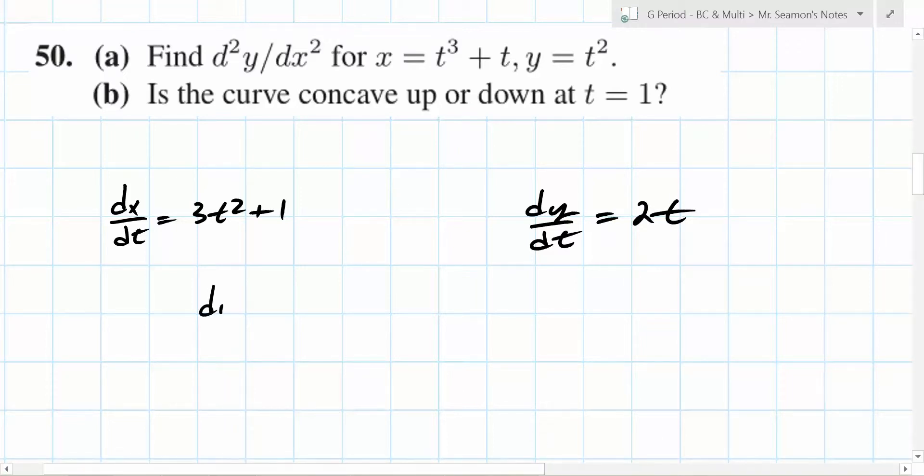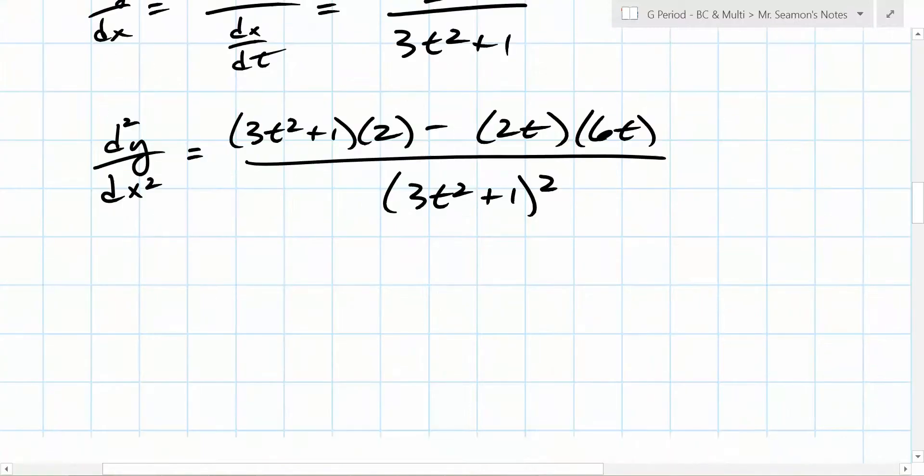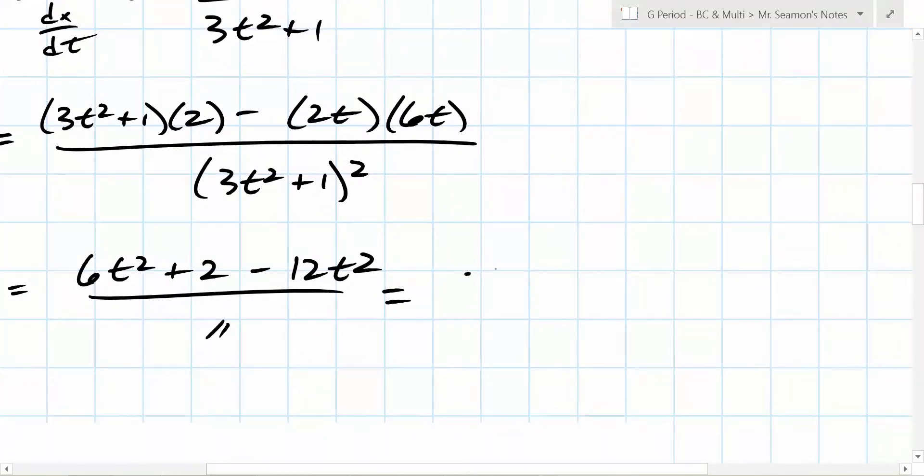We know that x equals t cubed plus t. So can you tell me what dx/dt is? 3t squared plus what? 1. And we also know that dy/dt is equal to what? 2t. Okay, that helps us. We know, do you remember this? We know that dy/dx is equal to what? dy/dt over what? dx/dt. So what's that going to be? 2t over 3t squared plus 1.